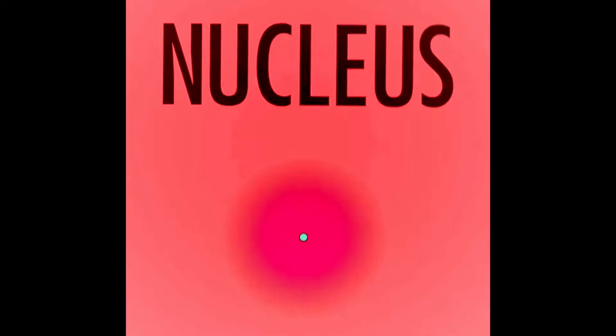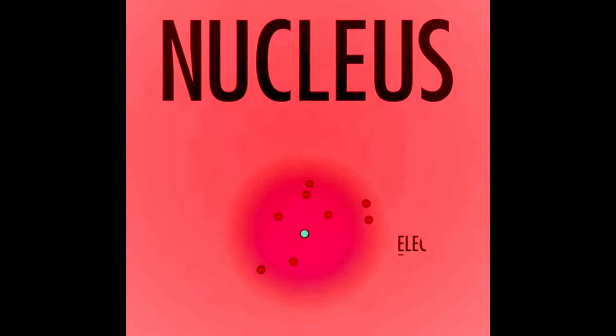Protons and neutrons make up the nucleus or the center of the atom. Electrons are on the outside spinning around the nucleus.